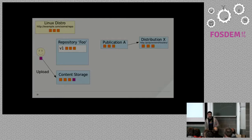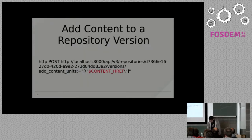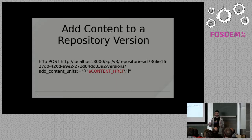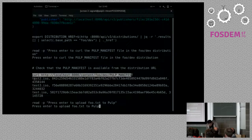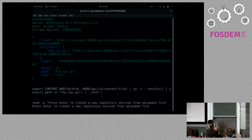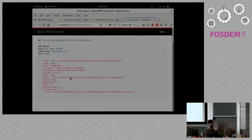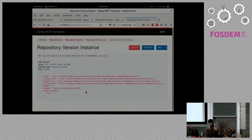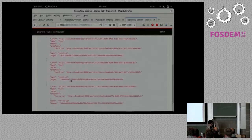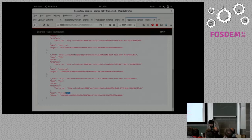Next we're going to upload some content into Pulp, and then after we upload the content we're going to add it to our repository. Whenever you add content to a repository, a new repository version gets created — you can add one piece of content or a bunch at once. We do the upload and then create a new repository version. The task completed and produced a new repository version which now has four files in it, including a new file: foo.tar.gz.